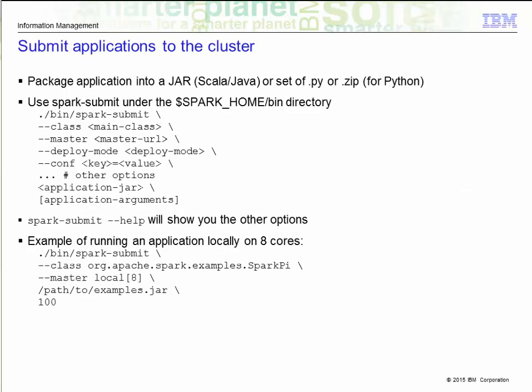In short, you package up your application into a jar for Scala or Java, or a set of .py or zip files for Python. To submit your application to the Spark cluster, you use the spark-submit command, which is located under the spark home slash bin directory. The options shown on the slide are the commonly used options. To see other options, just invoke spark-submit with the help argument. The class option is the main entry point to your class — if it is under a package name, you must provide the fully qualified name. The master URL is where your cluster is located. This is the recommended approach to provide the master URL here, instead of hard coding it in your application code.